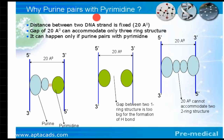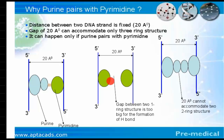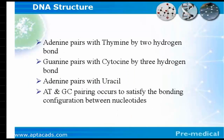Purine always pairs with pyrimidine because there is a fixed distance of 20 Ångström between the two strands of DNA, which accommodates only a three-ring structure. This is possible only when a purine pairs with a pyrimidine. If two pyrimidines were to join, the gap would be too large to form hydrogen bonding; if two purines joined, it would be too tight and leave no space for hydrogen bonding.